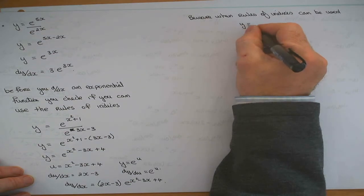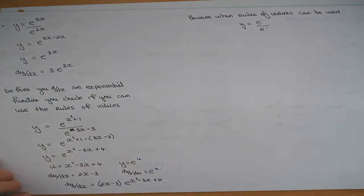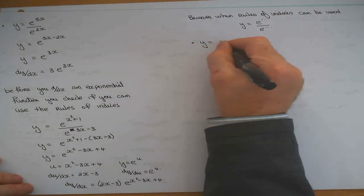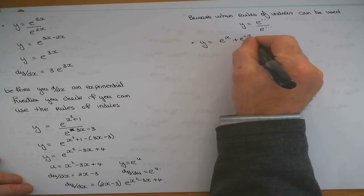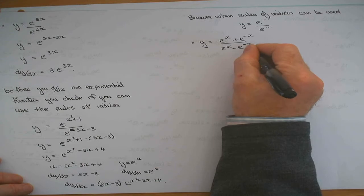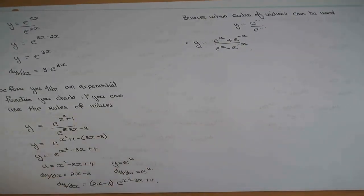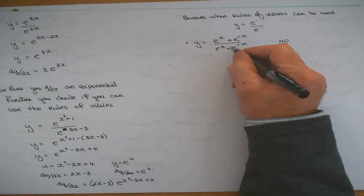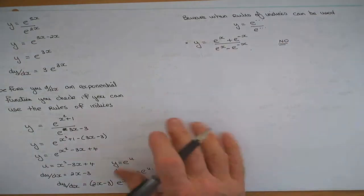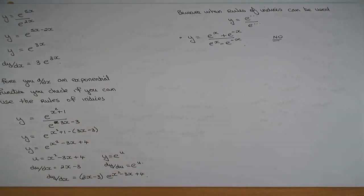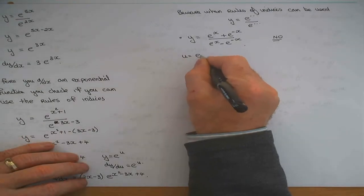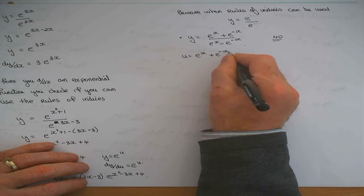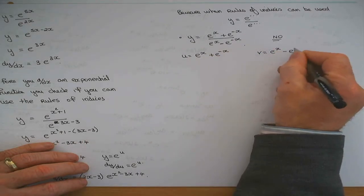Beware of when the rules of indices can be used — it has to be e to some power divided by e to some power. For the function (e to the x plus e to the minus x) over (e to the x minus e to the minus x), you'd ask: can I use the rules of indices? No — because of the plus and minus signs; it's not e to the power divided by e to the power. So it's a quotient rule. Let u equal to e to the x plus e to the minus x, and v equal to e to the x minus e to the minus x.